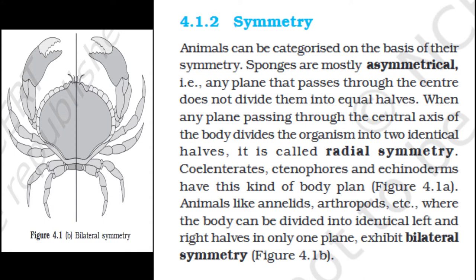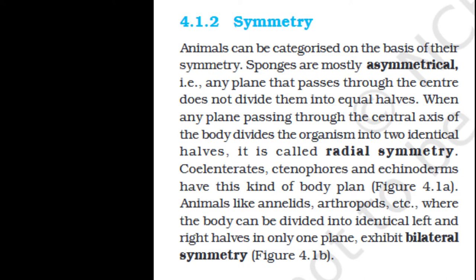Section 4.1.2: Symmetry. Animals can be categorized on the basis of their symmetry. Sponges are mostly asymmetrical — any plane passing through the center does not divide them into equal halves. When any plane passing through the central axis divides the organism into two identical halves, it is called radial symmetry. Coelenterates, ctenophores, and echinoderms have this kind of body plan. Animals like annelids and arthropods, where the body can be divided into identical left and right halves in only one plane, exhibit bilateral symmetry.